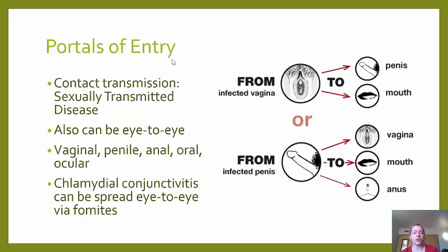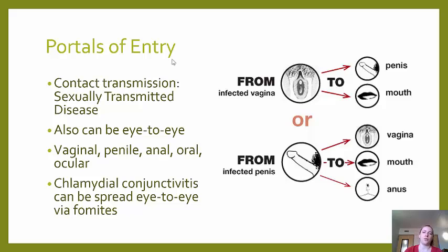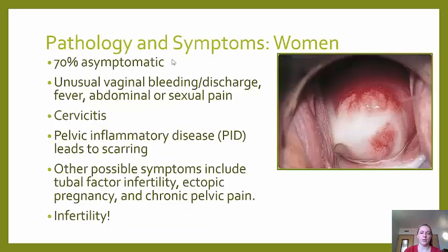Portals of entry: Chlamydia is a sexually transmitted disease transmitted through contact — from vagina to penis or mouth, or penis to vagina, mouth, or anus. Chlamydia conjunctivitis can also be spread eye to eye or via fomites.